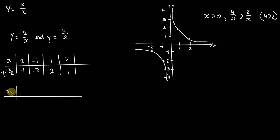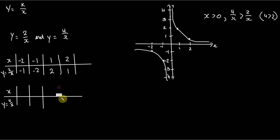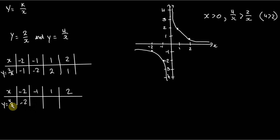So y equals 4 over x is going to sit on top in the first quadrant, while in the third quadrant it's actually going to be below. Let's just plot the points - we can discern that without even having to plot points, but let's go through the motions. When x is negative 2, 4 over negative 2 is negative 2. Likewise, 4 over negative 1 is negative 4. And 4 over 1 is 4, and 4 over 2 is 2.